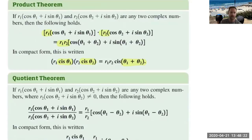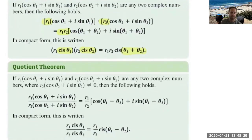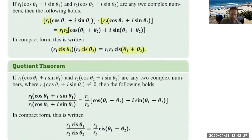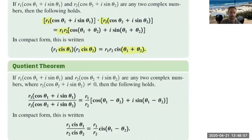What do you think happens when we divide? We take the R's and divide them. And what about the angles? When we multiplied we added the angles, and when we divide we subtract. Whether you write it all out or use the cis notation, you need to know these are one and the same. Quotient rule: divide the R's, subtract the angles.